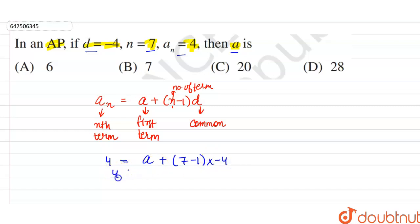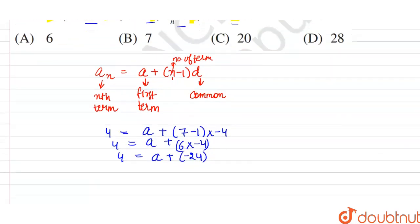So 4 is equal to A plus 7 minus 1 is 6, 6 into minus 4. So this is equal to 4 is equal to A plus 6 into minus 4 is minus 24.